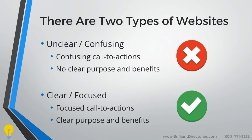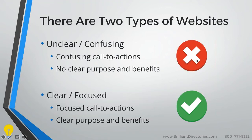There are two types of websites. We have unclear and confusing websites, which often have confusing calls to action and no clear purpose or benefits. A call to action is essentially a button or text box on your website that tells the visitor what to do — whether that be to register, sign up for your newsletter, or buy a membership package. On the opposite side, we have clear and focused websites. These are the ones that attract the most members. They have focused calls to action and clear purpose and benefits communicated right there on their homepage and throughout their entire website.